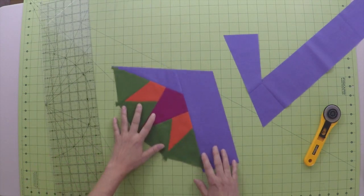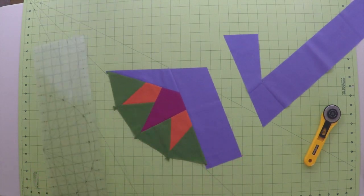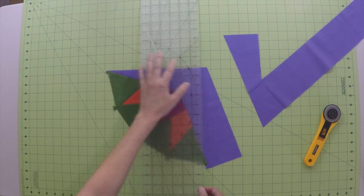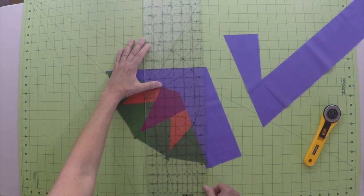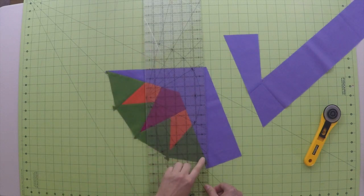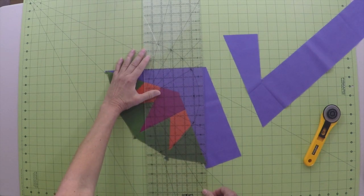Rotate the unit and place your straight edge ruler horizontal line on the cut you just made. Line up the right side of the ruler a quarter inch from your pin marker. Make your second cut.